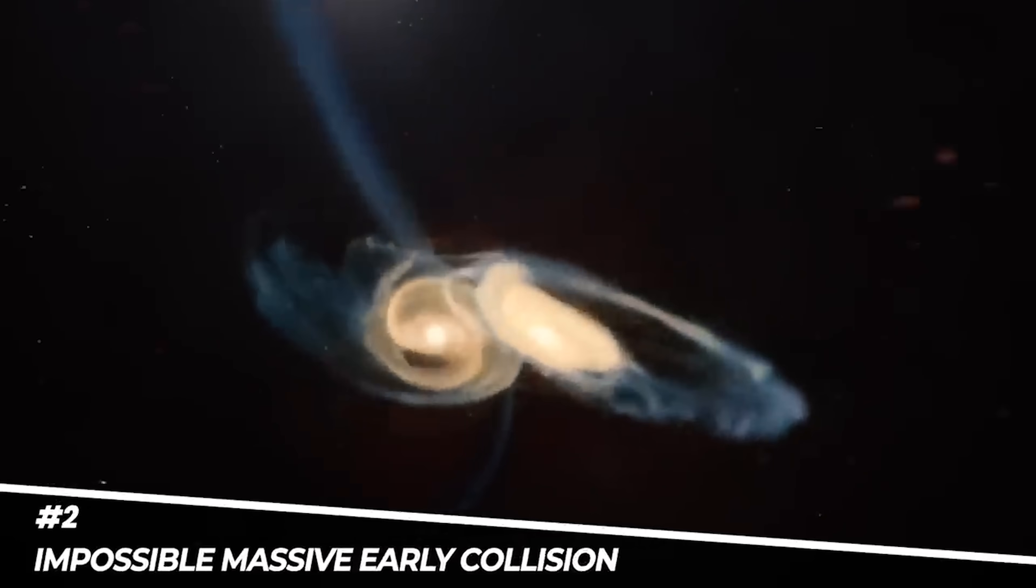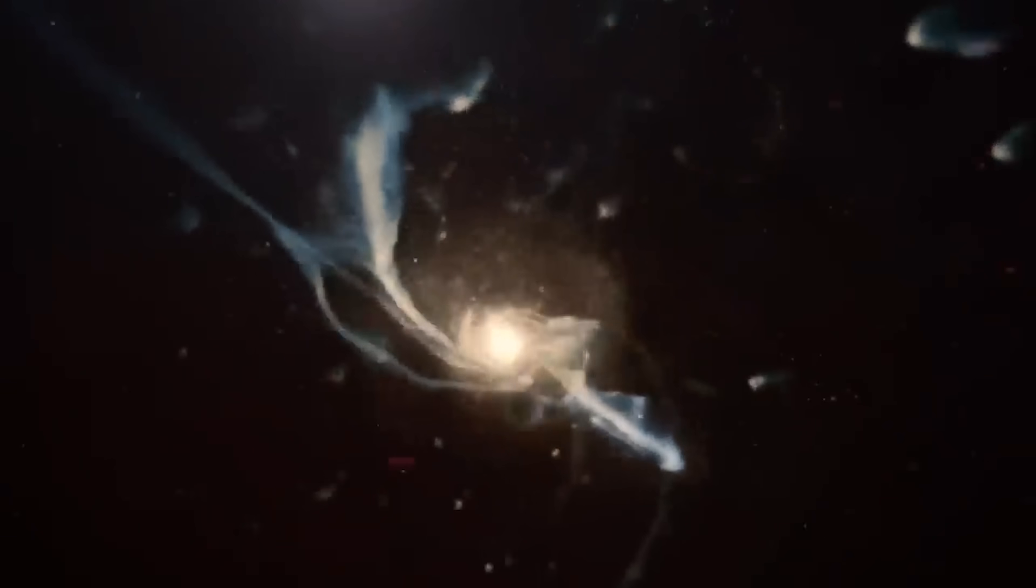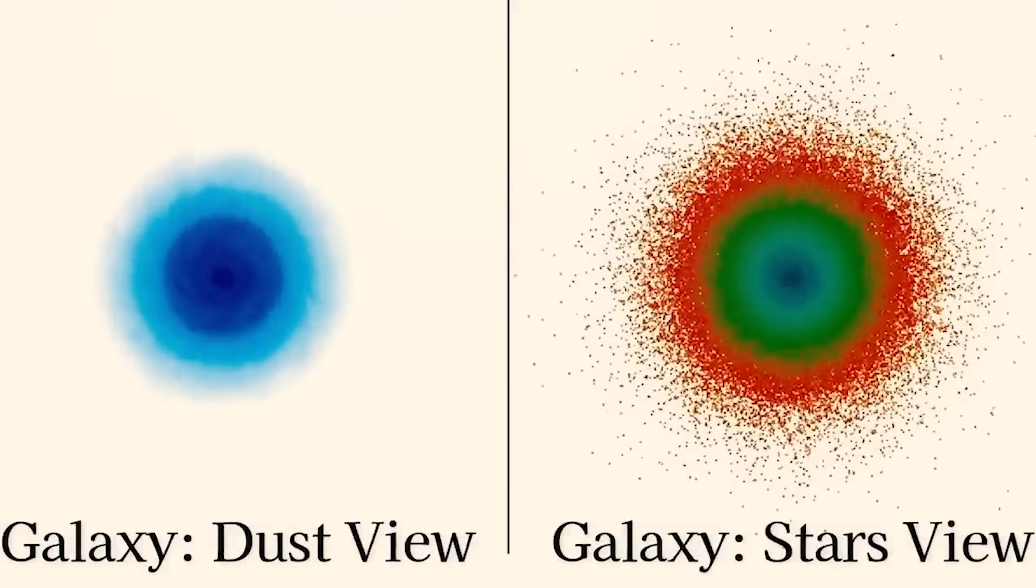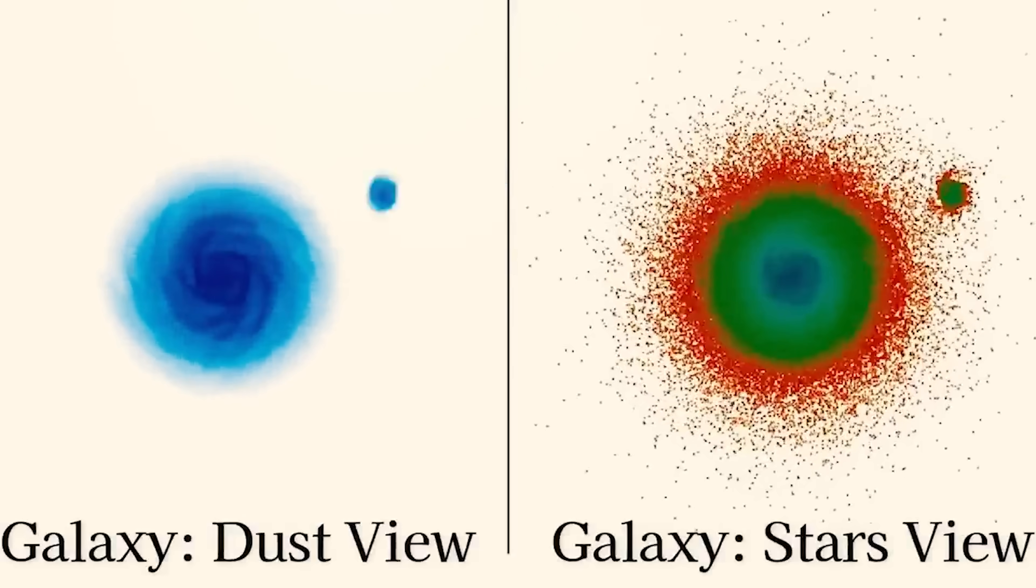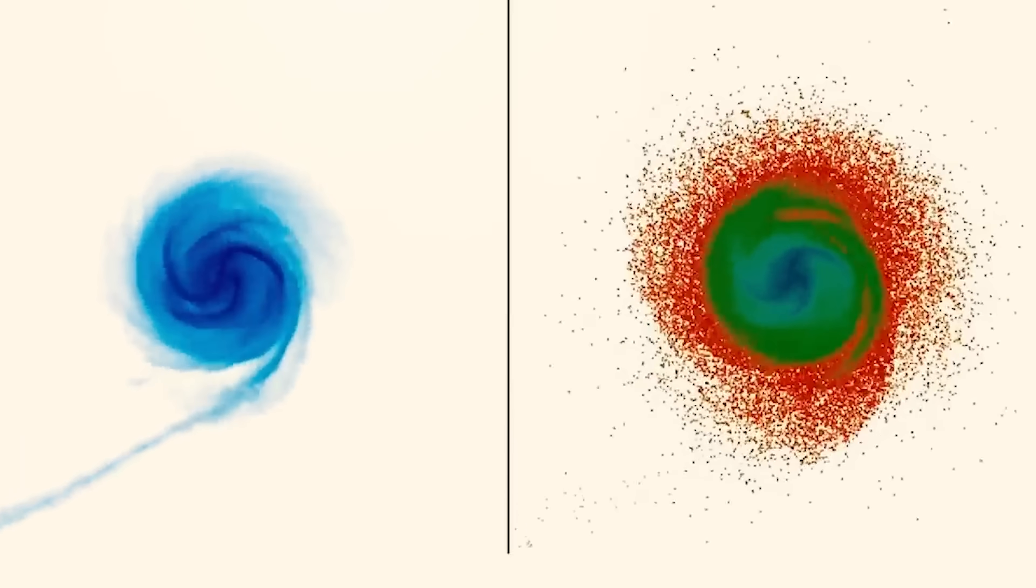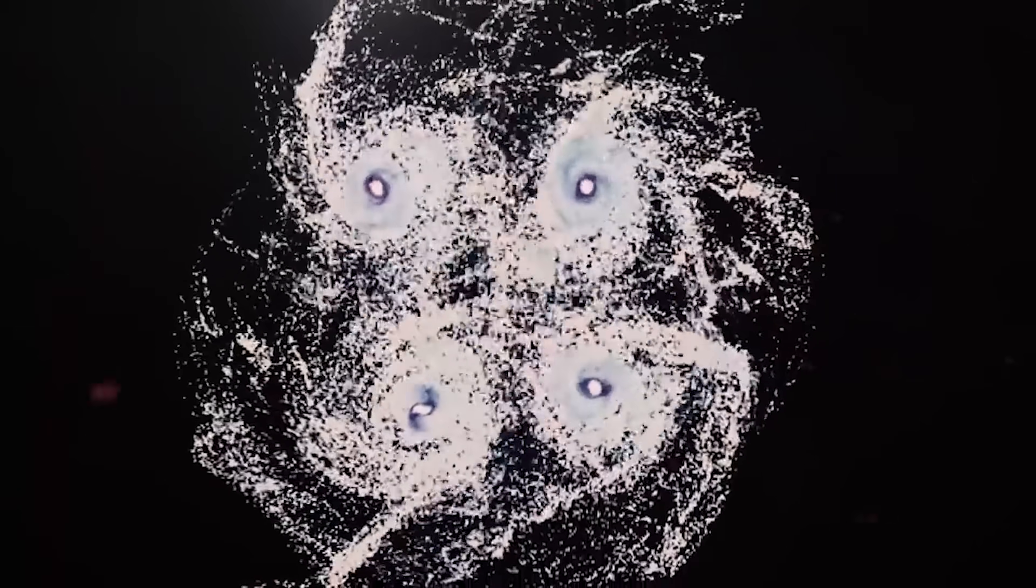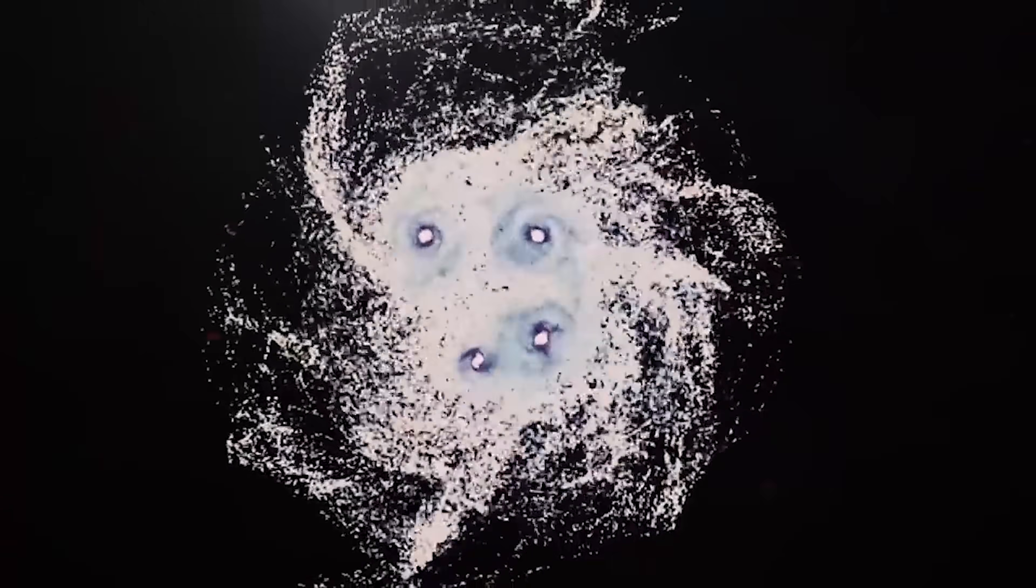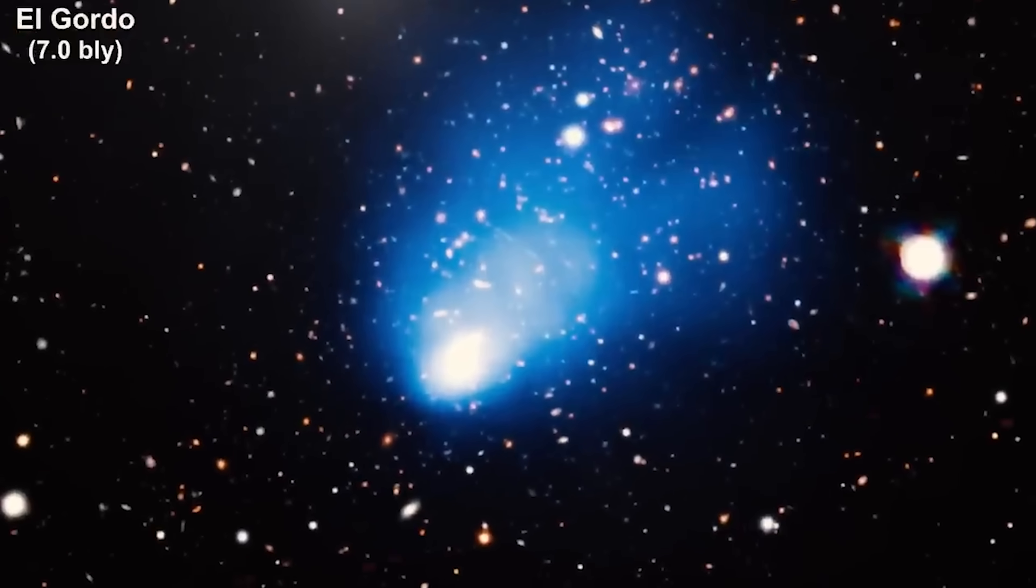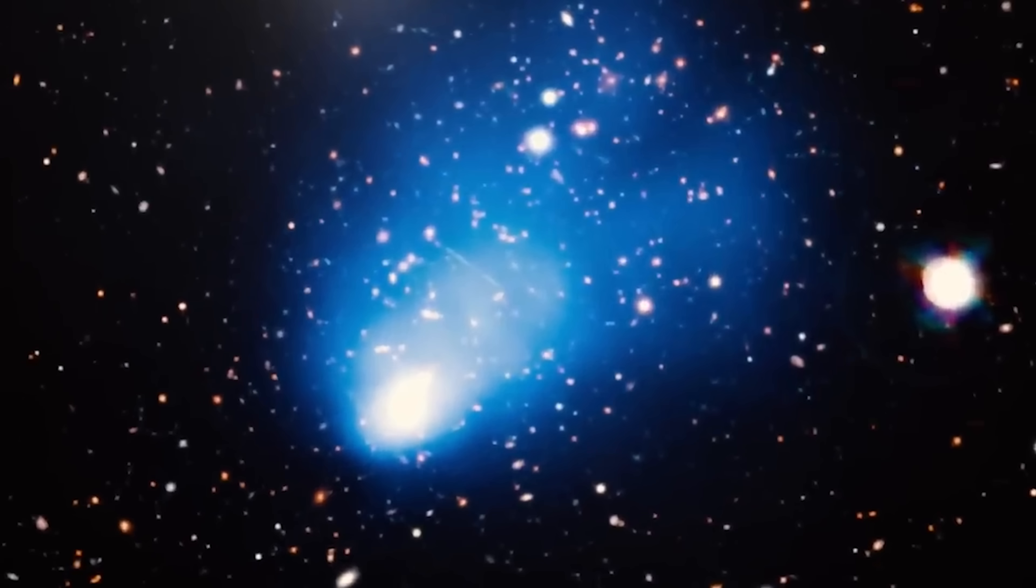Then came another surprise: evidence that two enormous structures smashed into each other long before such titanic encounters were supposed to happen. Just as cosmologists were finally getting comfortable with existing timelines for early collisions, Webb delivered yet another curveball. This time, the culprit was the violent merger of two massive galaxy clusters. Their impact forged an enormous cluster known as El Gordo, and the event occurred when the universe was only halfway through its life, far earlier than the standard model allows.